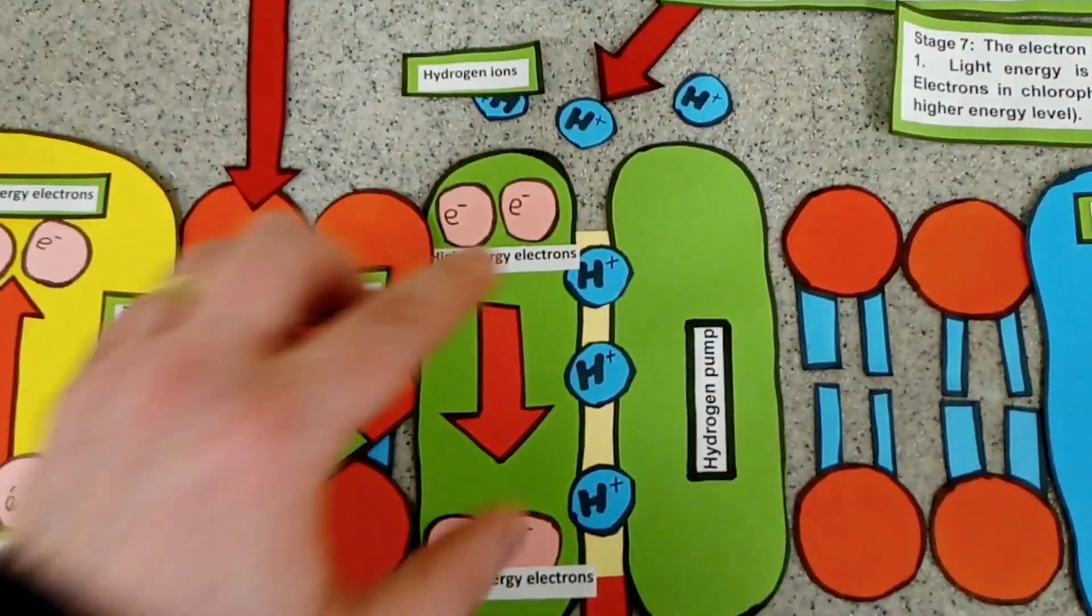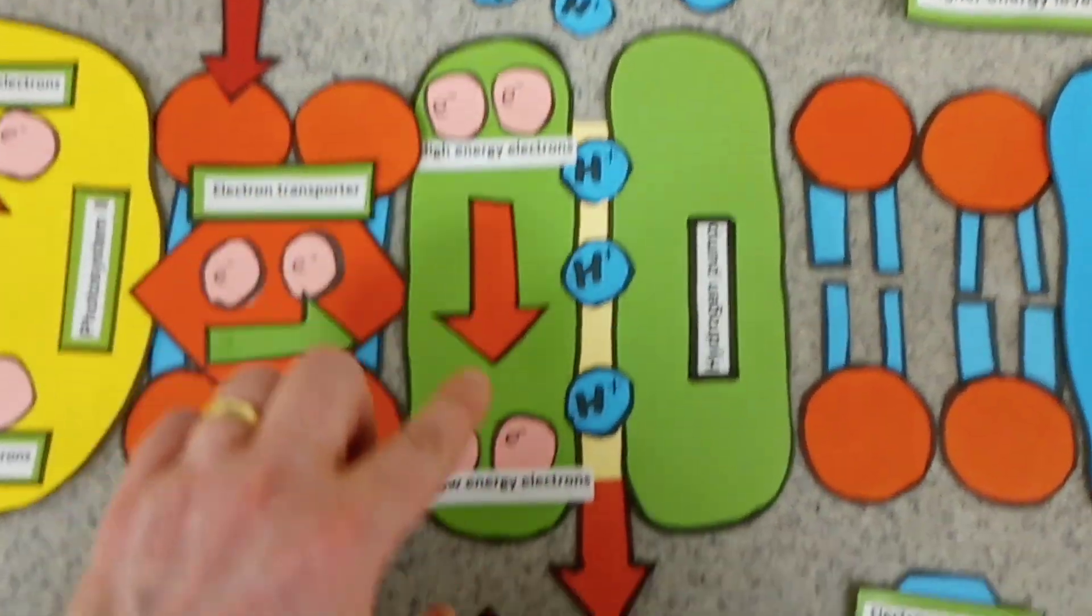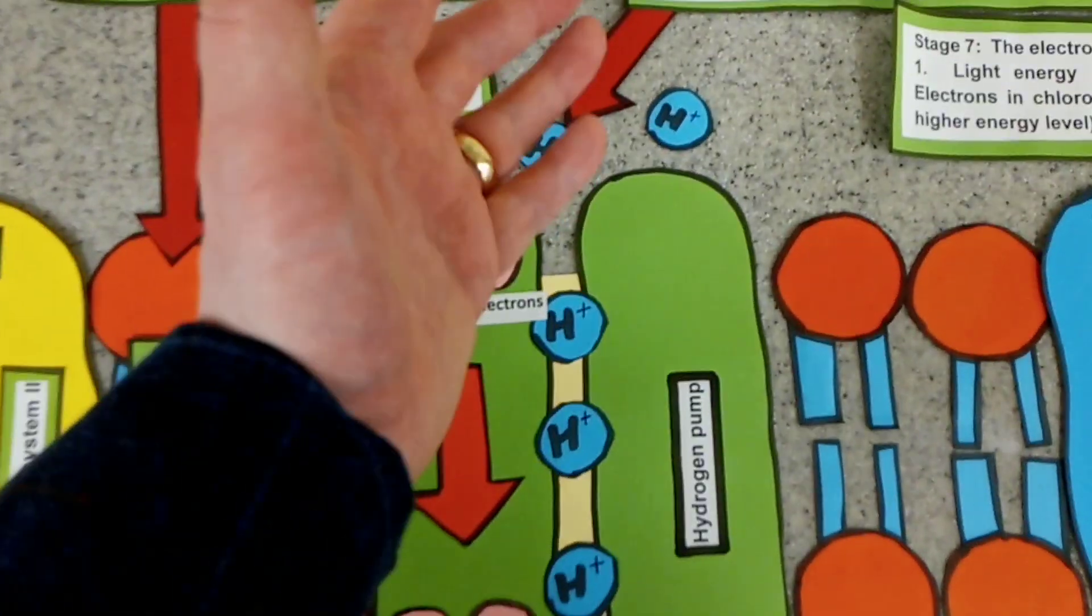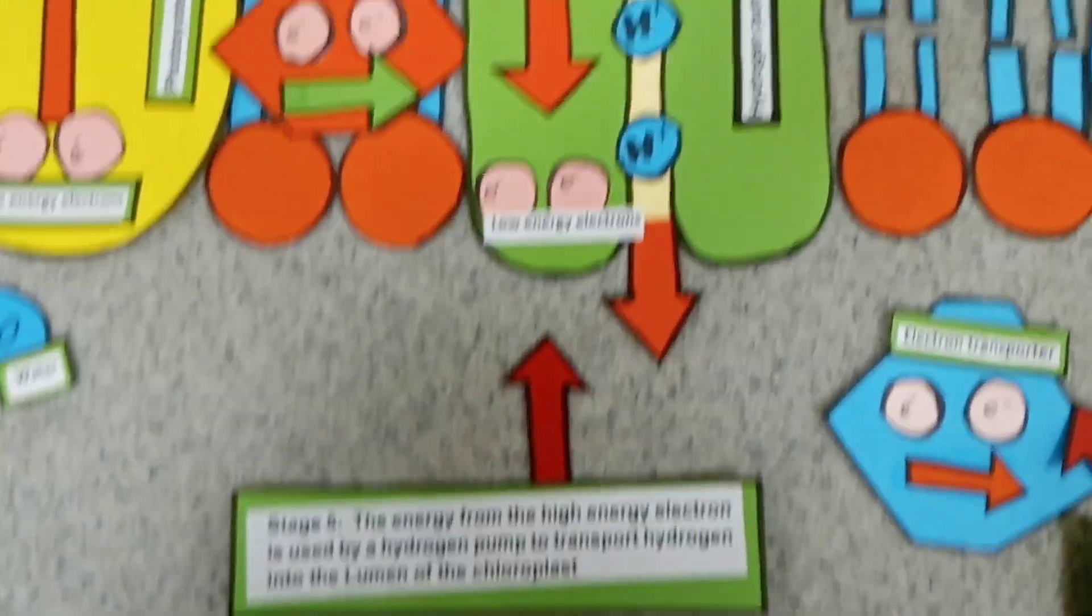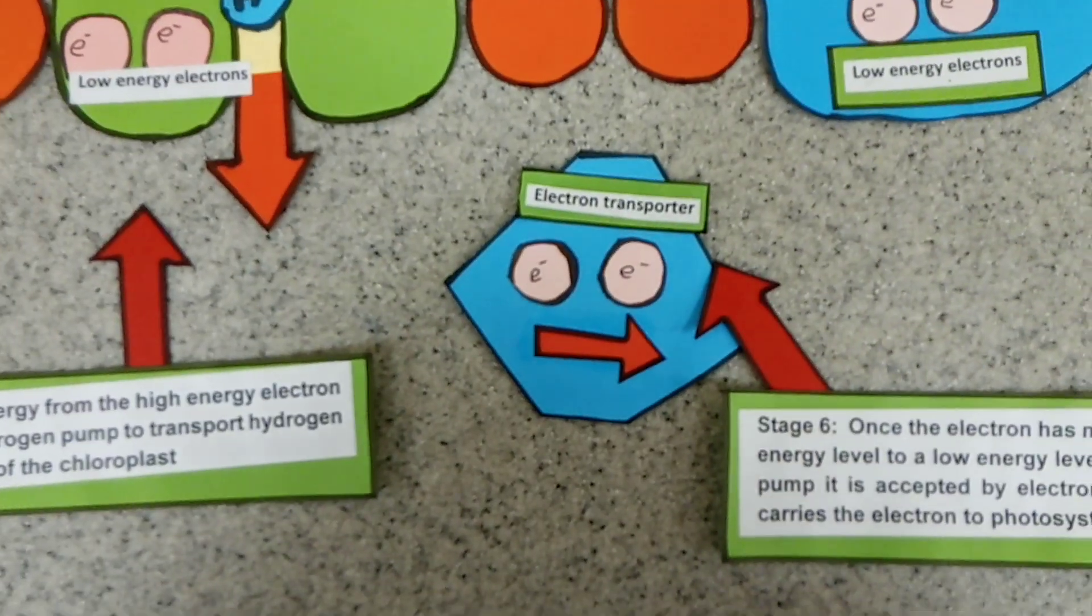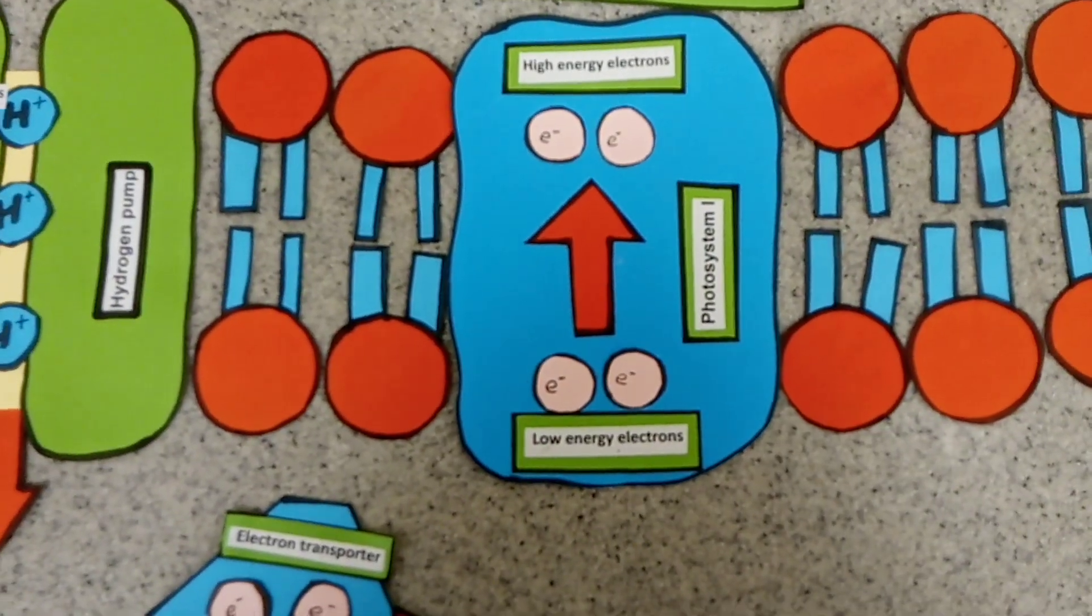In that hydrogen pump, the electrons go from a high energy level to a low energy level and pull hydrogen ions through from the stroma into the lumen of the thylakoid. The electrons are then accepted by an electron transporter and carried to photosystem 1.